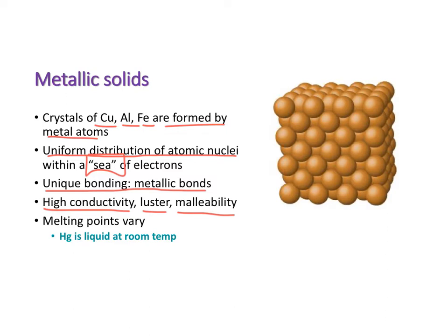The melting points of metallic solids vary depending on the type of metal. For example, mercury is a liquid at room temperature, meaning it has a lower melting point compared to other metals that have higher melting points.